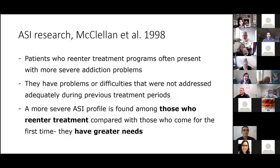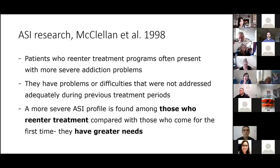Tom McClellan in 1998 did research on the ASI and found that patients who re-entered treatment programs often presented with more severe addiction problems. They had difficulties that weren't addressed in their previous treatment episode — things being missed that led to relapse. A more severe ASI profile was found among patients returning to treatment compared to first-timers. Basically, patients who relapsed and did the poorest had the greatest unmet needs.